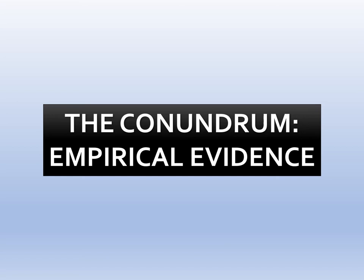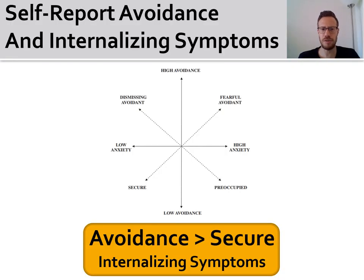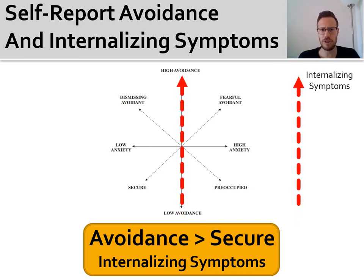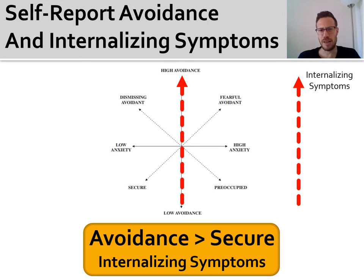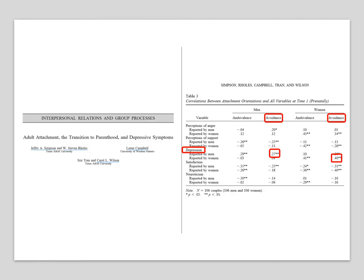But the conundrum really bolsters when we assess the empirical evidence of the links between insecure avoidance as assessed in the two traditions and internalizing symptoms. When assessing avoidance via self-report, research has shown that those who score higher on the dimension of avoidance tend to endorse more internalizing symptoms compared to those who are lower on the avoidance dimension. Given that secure individuals are characterized by low scores on the avoidance dimension, one may think of these findings as avoidant individuals having significantly more internalizing symptoms compared to their secure counterparts. Let's look at some examples.